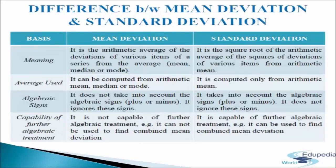Difference between mean deviation and standard deviation. The first basis is meaning. Mean deviation is the arithmetic average of the deviations of various items of a series from the average — mean, median, or mode. Whereas standard deviation is the square root of the arithmetic average of the squares of the deviations of various items from the arithmetic mean.